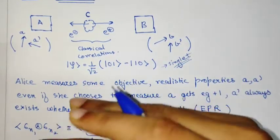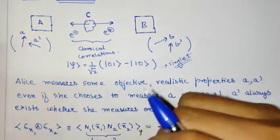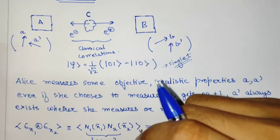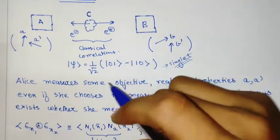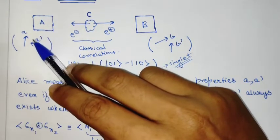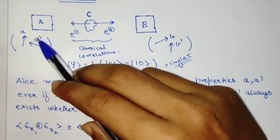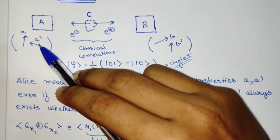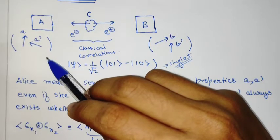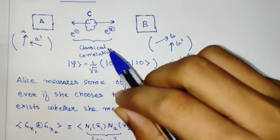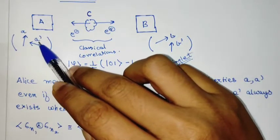A' always exists and has a deterministic value, either +1 or -1, without any superposition. So ±1 is a random variable that A' can take, but at any time it takes only one of the two values. The same thing happens for A, A', B, B'.